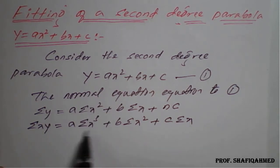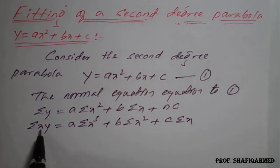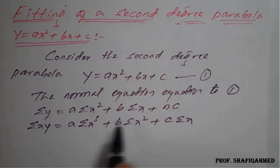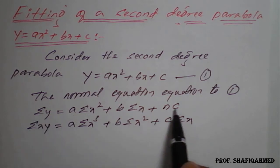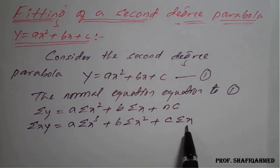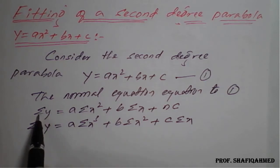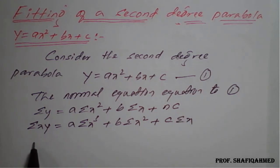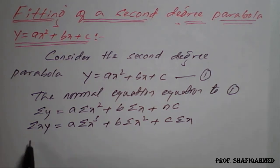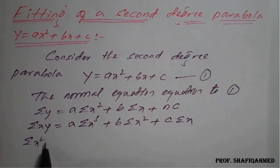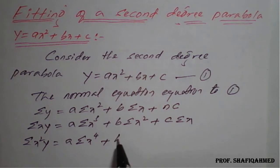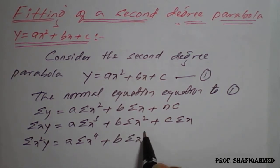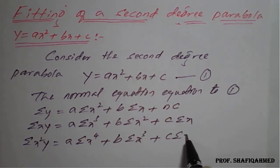Then we need to multiply x² as well — meaning either multiply x² to the first equation to get the third equation, or multiply only x to the previous equation. Either approach gives the same result. Multiplying x to the previous equation: summation(x²y) = a·(summation x⁴) + b·(summation x³) + c·(summation x²). This is the third normal equation for the given parabola.